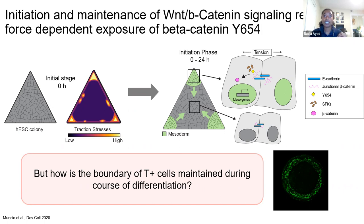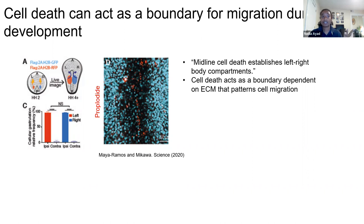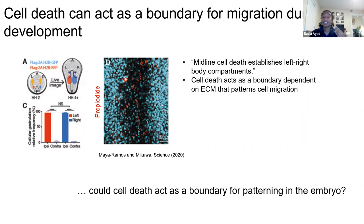For inspiration, work from Takashi Mikawa's lab at UCSF showed that in the chick embryo during primitive streak formation, apoptotic cells are deposited in the midline. Cells undergoing EMT migrate ipsilaterally—left-side cells stay on the left and right-side cells stay on the right. When apoptotic cells were removed and cell death was prevented, cells crossed to the opposite side, showing that cell death acts as a boundary dependent on ECM and migration patterns. I asked whether cell death could similarly act as a boundary in our system.